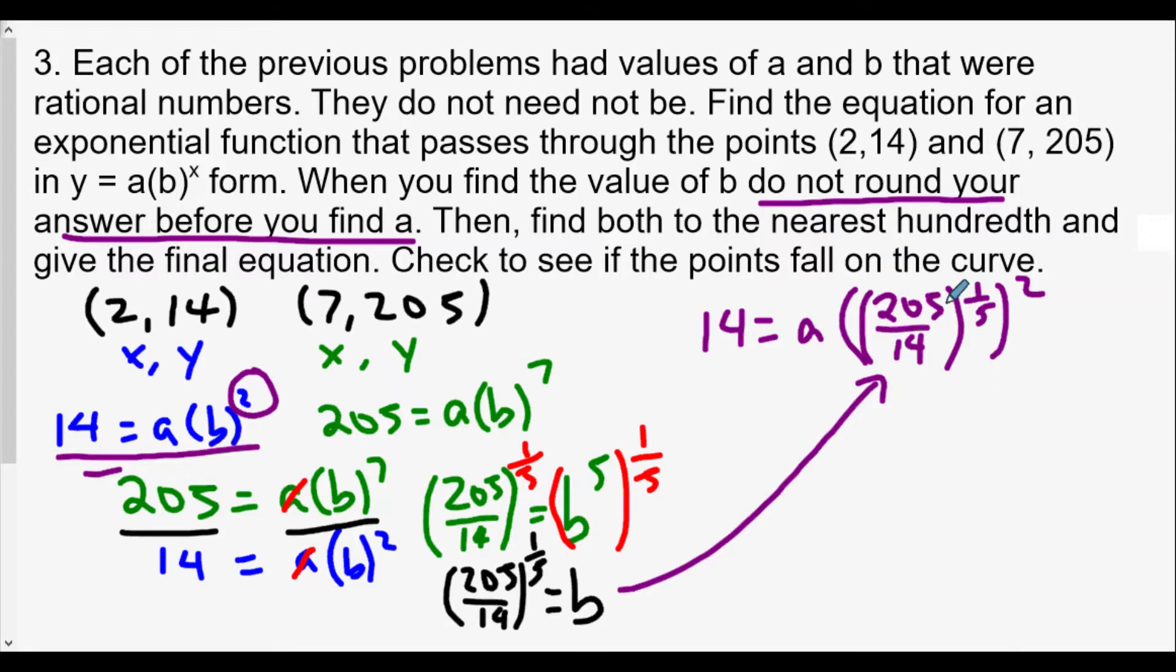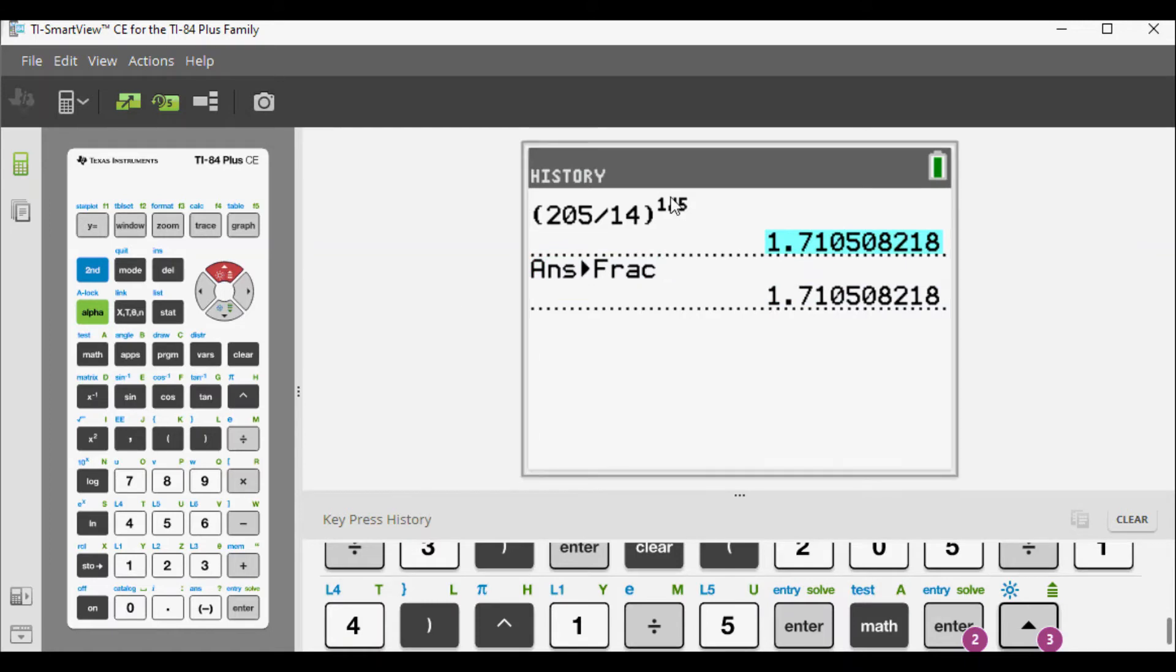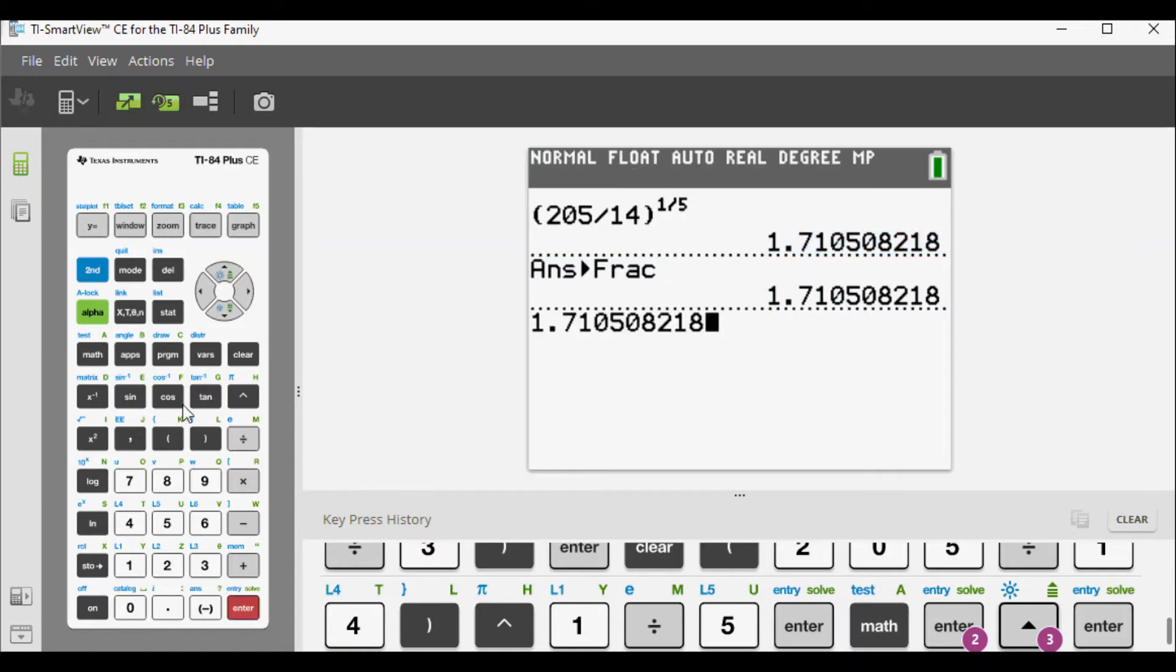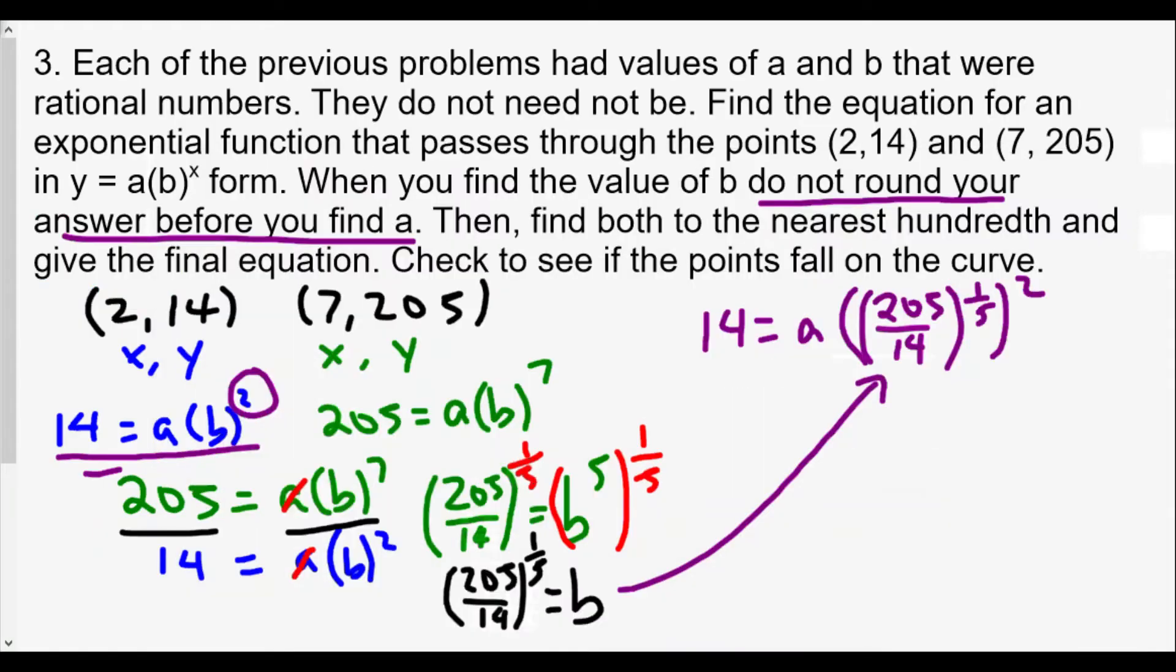It's a good thing because we have this numerical value already solved in our calculator. We're going to take this and square it. Let's go back to our calculator. Just to make sure, I'll take this one here and square it because that's what it has to do. And so now we get 2.925838364 as the value of b squared. Let's get back to our work here. So we're going to get 14 equals a times 2.9258...